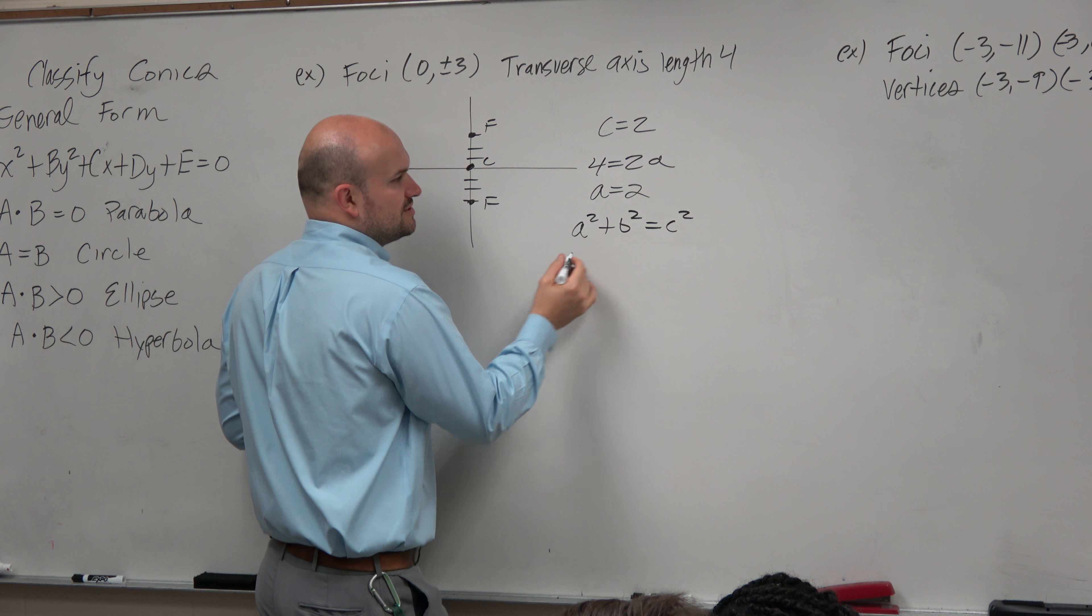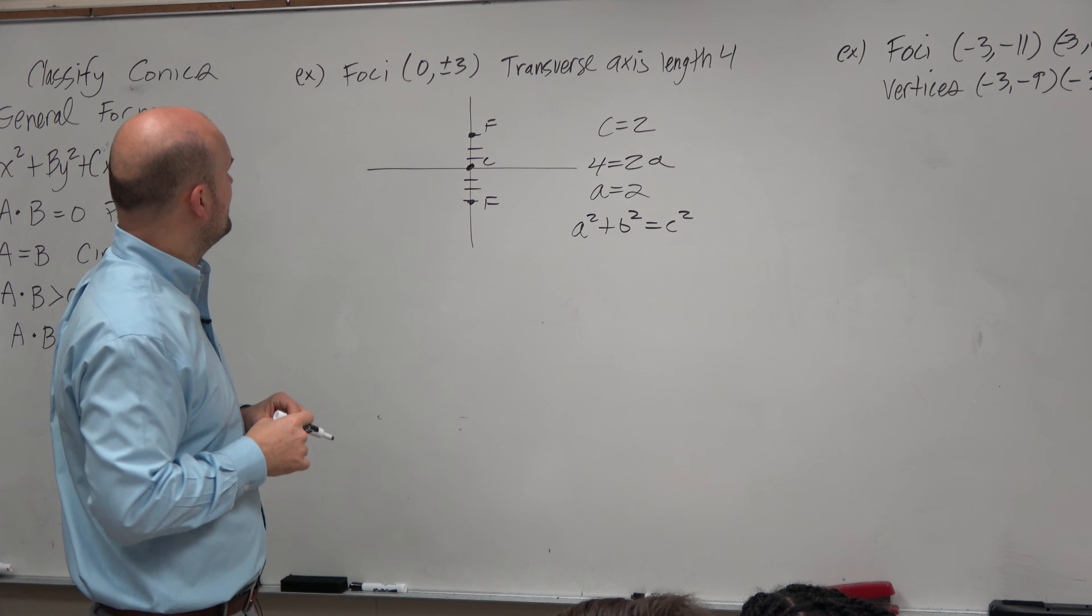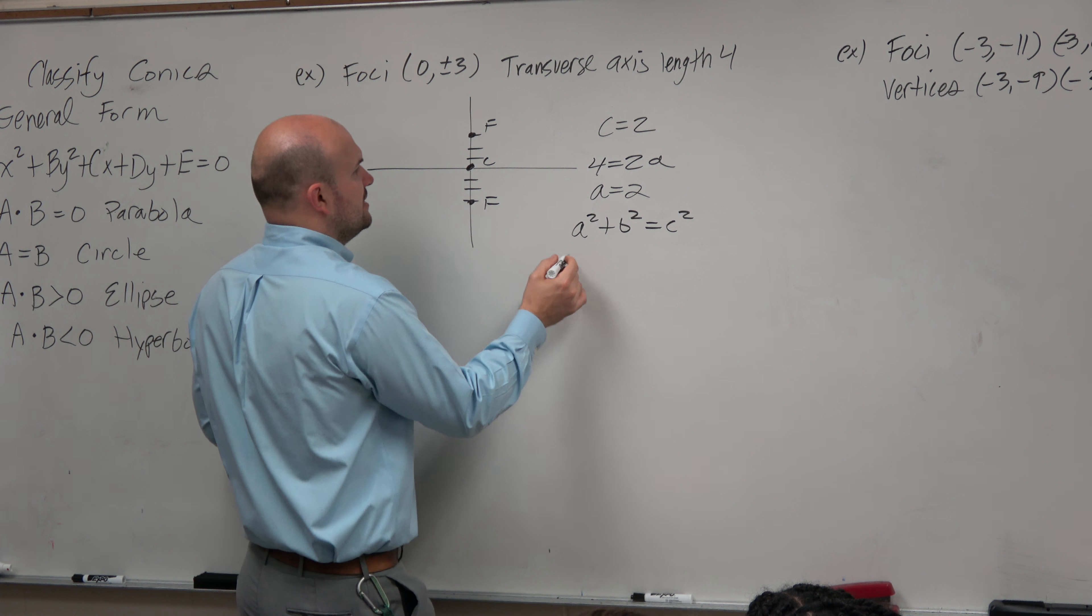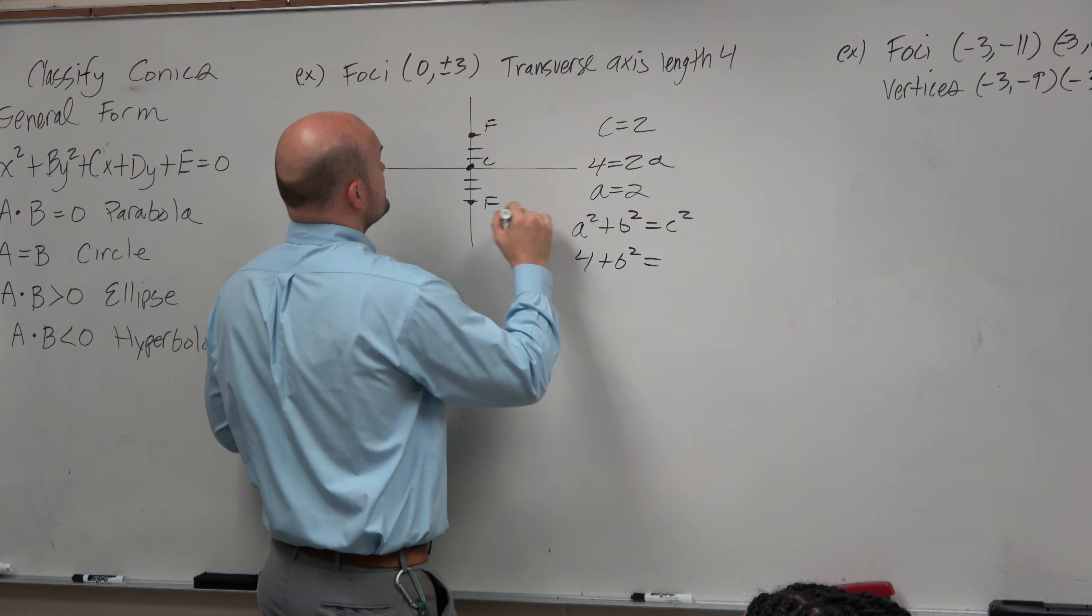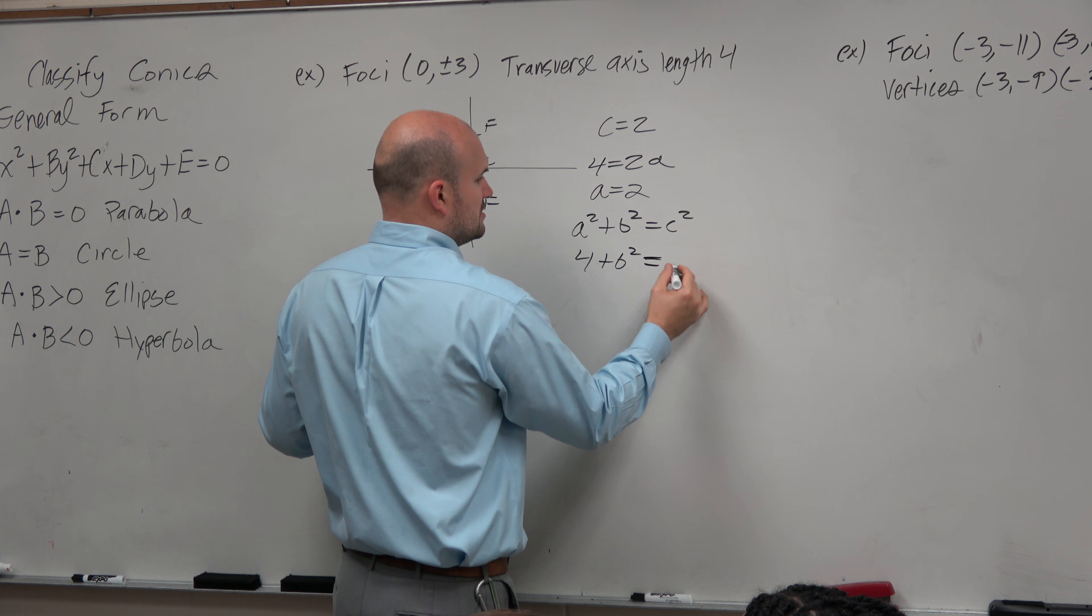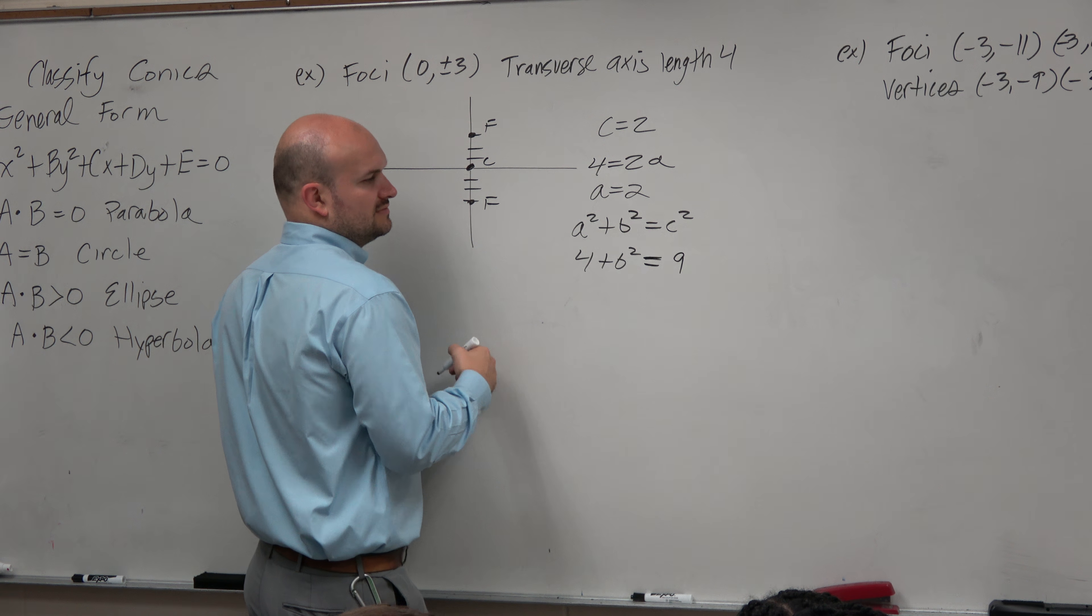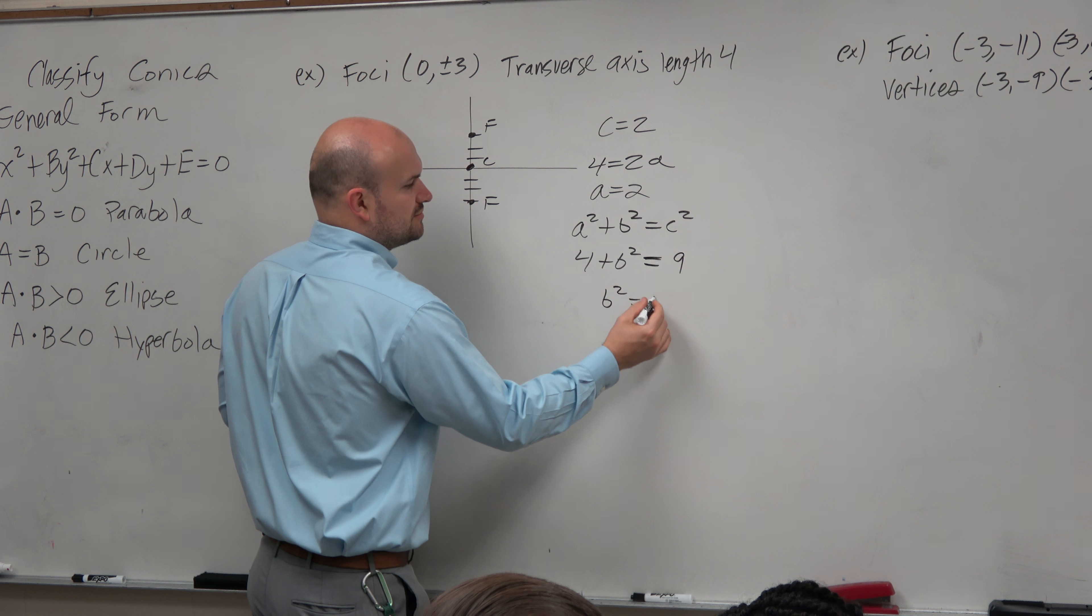I can plug in this. Oh, that's 3, yeah, okay. So therefore, I have a squared, which is 4, plus b squared, equals 3 squared, which is 9. So therefore, I can say b squared is equal to 5.